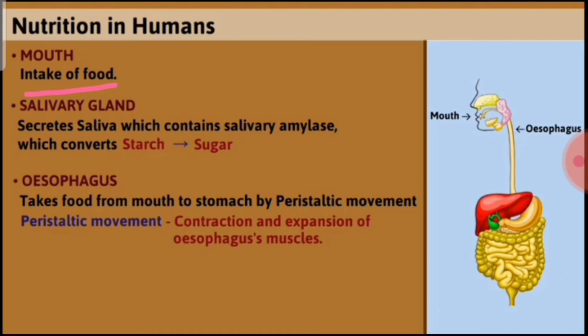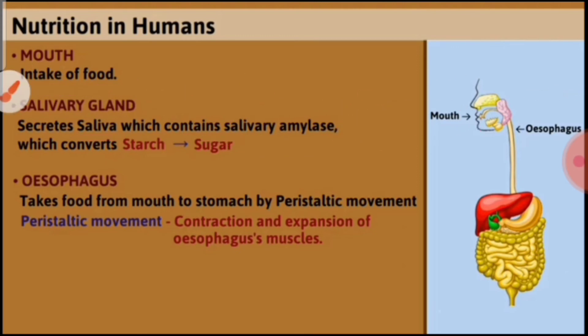In nutrition in humans, we take food through the mouth. Surrounding the mouth we have salivary glands that secrete saliva, which contains an enzyme called salivary amylase. Salivary amylase converts starch — a polysaccharide — into sugar, which is a disaccharide. After digestion in the mouth, the food goes to the esophagus.